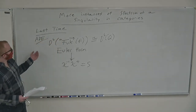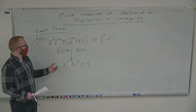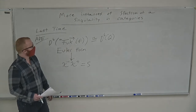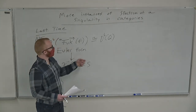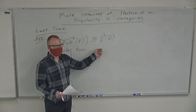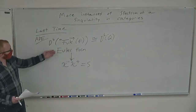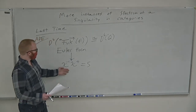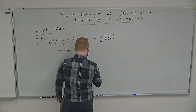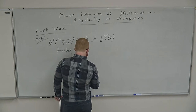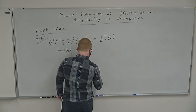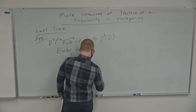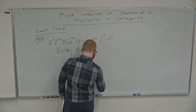We have this singularity category, which I tend to think of as the derived category of a directed Fukaya category. For the ADE case, this is equivalent to derived quiver representations. Last time we talked about how this Euler form for this quiver has this property where S is the Serre functor on the Grothendieck group of the category.